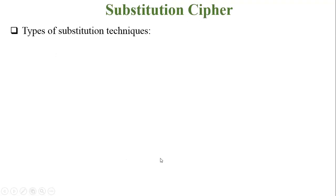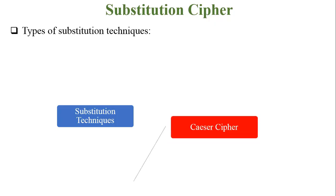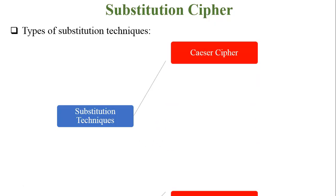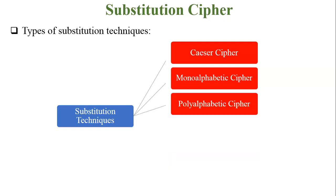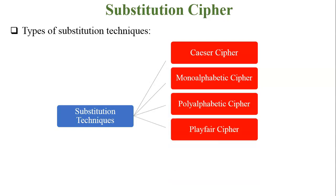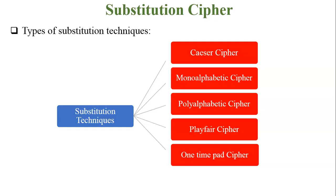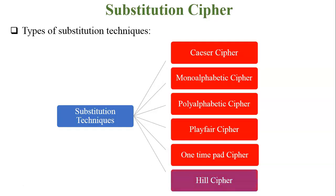There are six types of substitution techniques: first is Caesar cipher, second is mono-alphabetic, third is poly-alphabetic, fourth is Playfair cipher, fifth is one-time pad cipher, and sixth is Hill cipher. In this video we are going to discuss Hill cipher; the above five techniques are already discussed and videos are available in my channel.